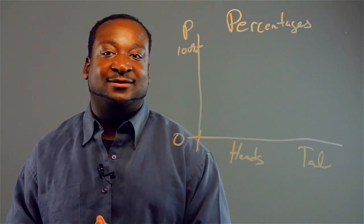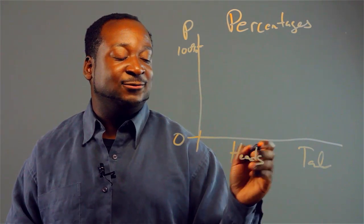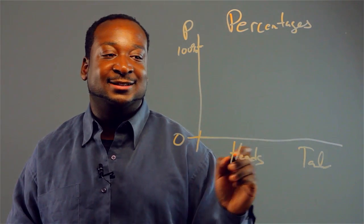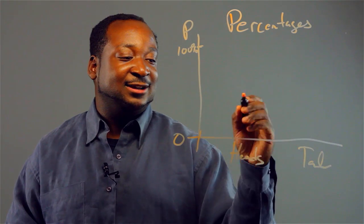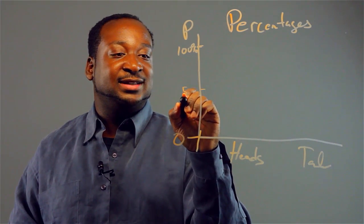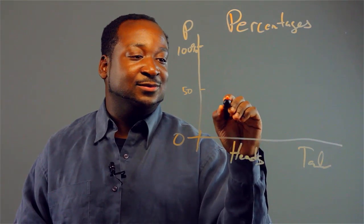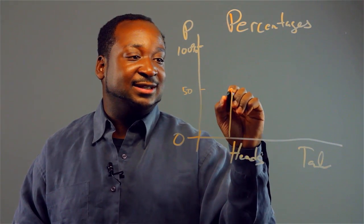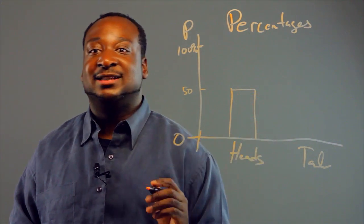Now, if you want to graph the probability that we will flip heads. Now, it's two of them, so it's 50 percent. So we'll just go up to 50. And we'll mark it here. The probability is 50.